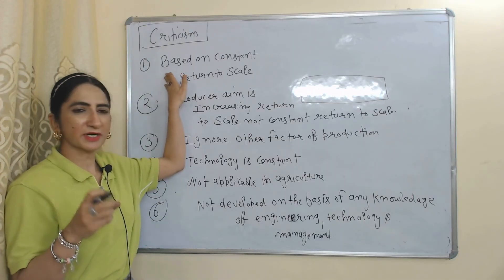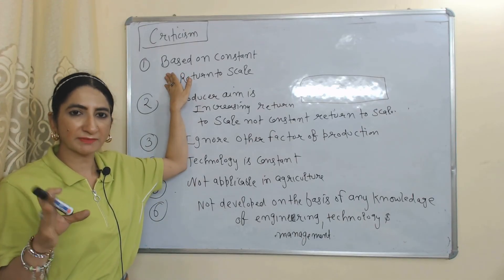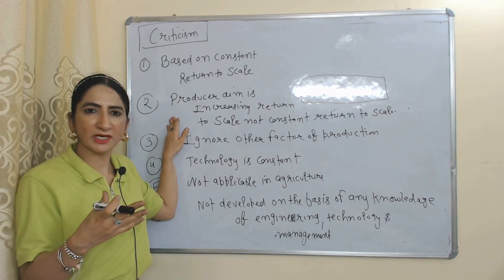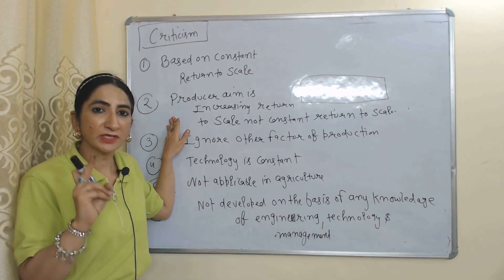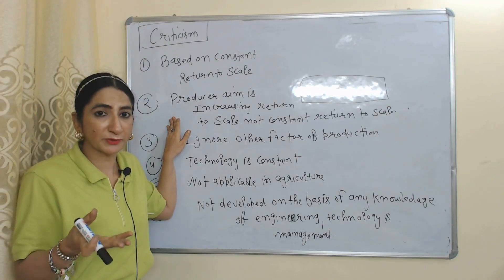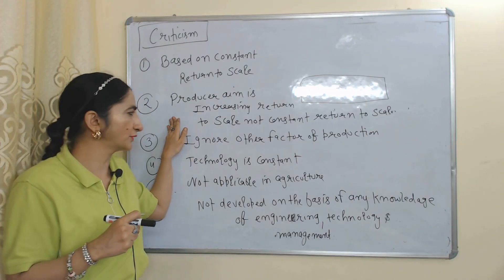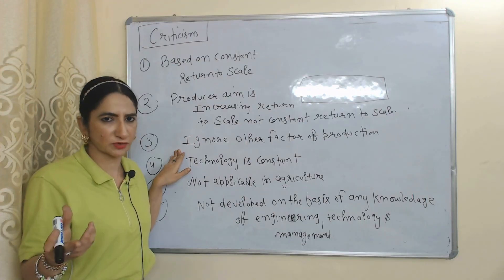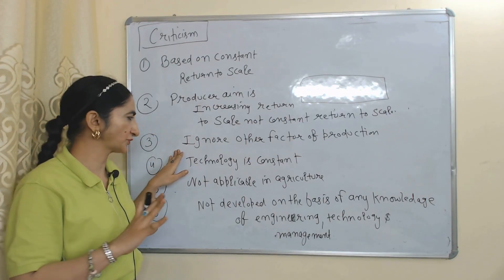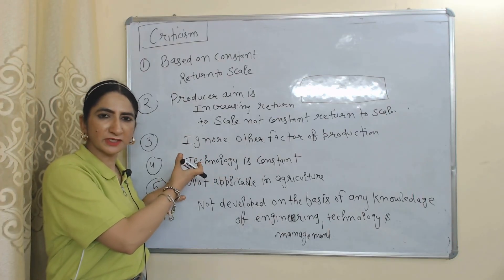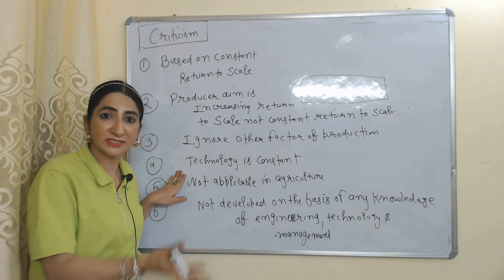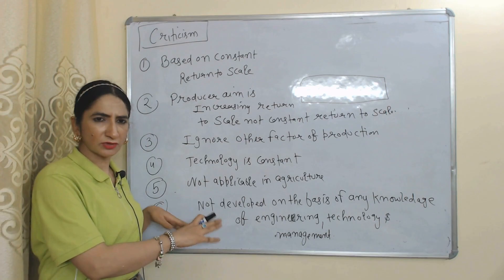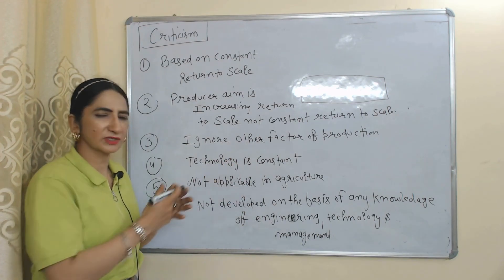Now we will see the criticisms. This production function is based on constant return to scale, but in reality we also have increasing and diminishing return to scale. A producer's aim is not constant return to scale — the producer wants increasing return to scale, i.e., more output compared to input. This function ignores other factors of production beyond labor and capital, assumes technology is constant when in reality technology is always changing, is not applicable in the agriculture sector, and does not develop any knowledge based on engineering, technology, or management.